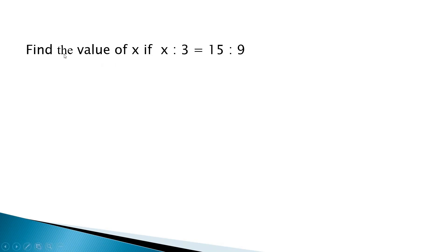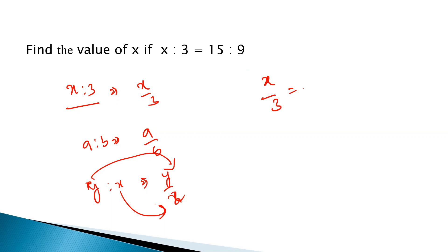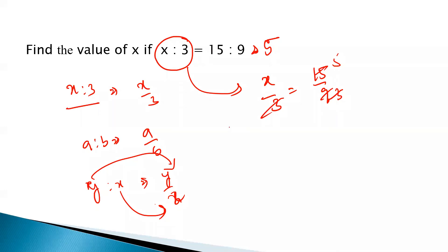Let us deal with a few questions on ratios. The first question: find the value of x if x is to 3 equals 15 is to 9. The representation of a ratio can also be written in fraction form — x is to 3 can be written as x by 3, and a is to b as a by b. So the antecedent goes in the numerator and the consequent goes to the denominator. Writing x by 3 equals 15 by 9, we solve to get x equals 5.